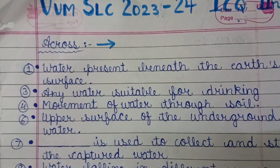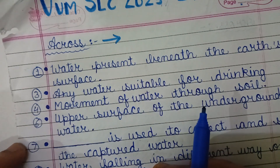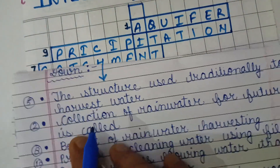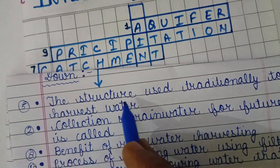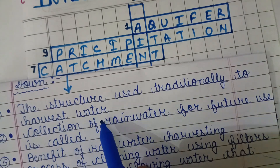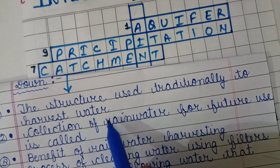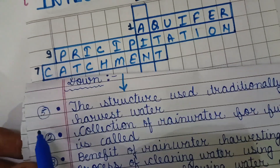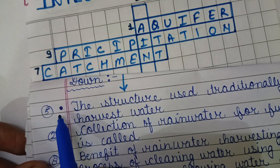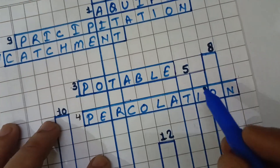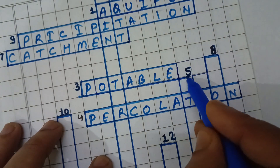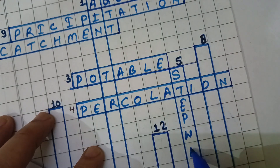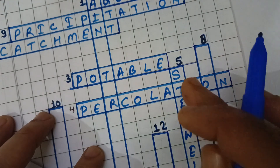Now fill downward crossword. First question downward: the structure used traditionally to harvest water is known as stepwell, filled in the 5th column downward — S-T-E-P-W-E-L — stepwell.